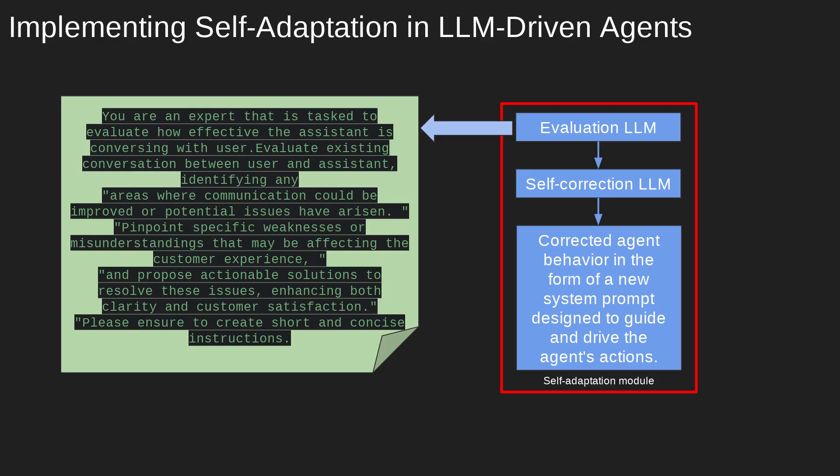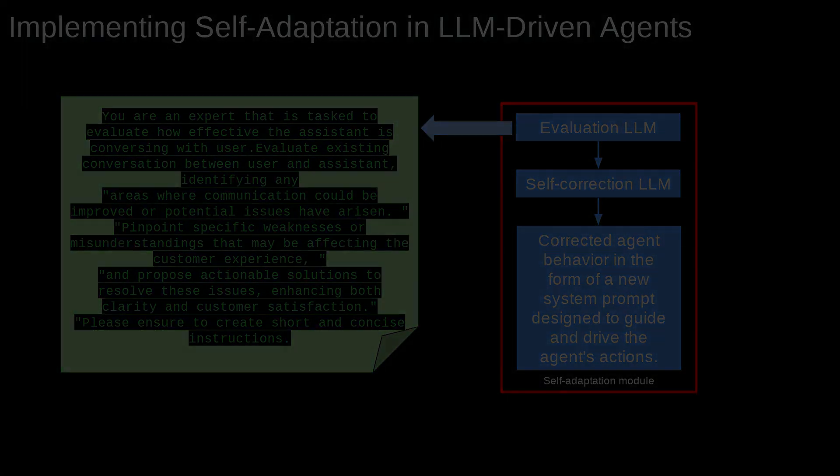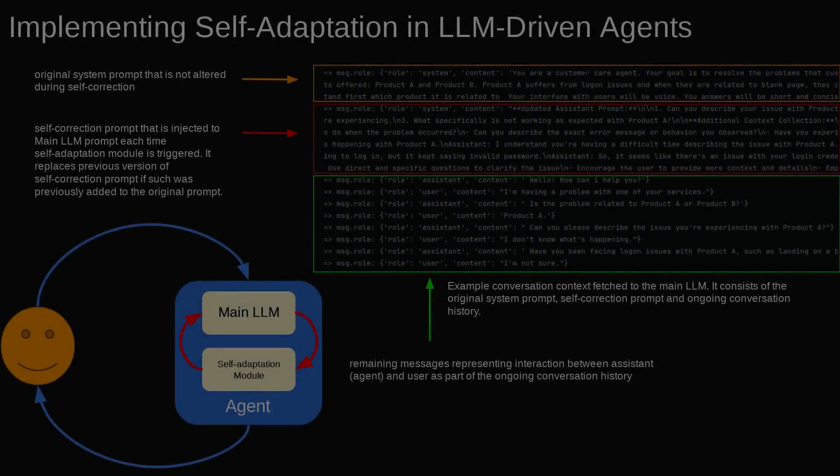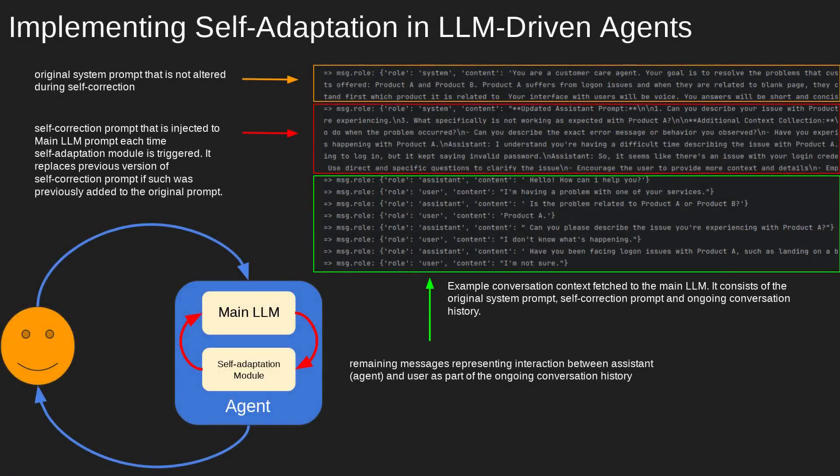Now that we've covered how self-correction is integrated into the agent, let's move on to the demo showcasing this in a real conversation. In this demo, each interaction epoch or question-response pair consists of three sequential calls to LLMs, with the self-adaptation LLM calls happening before the main LLM execution. The context sent to the main LLM includes the original system prompt, the self-correction instructions and the complete conversation history.